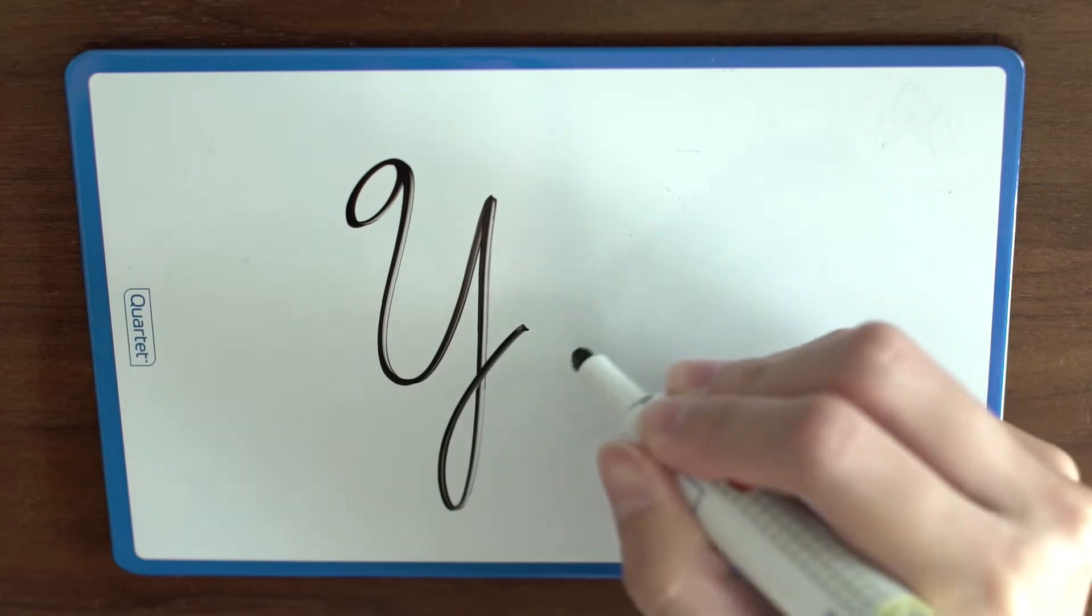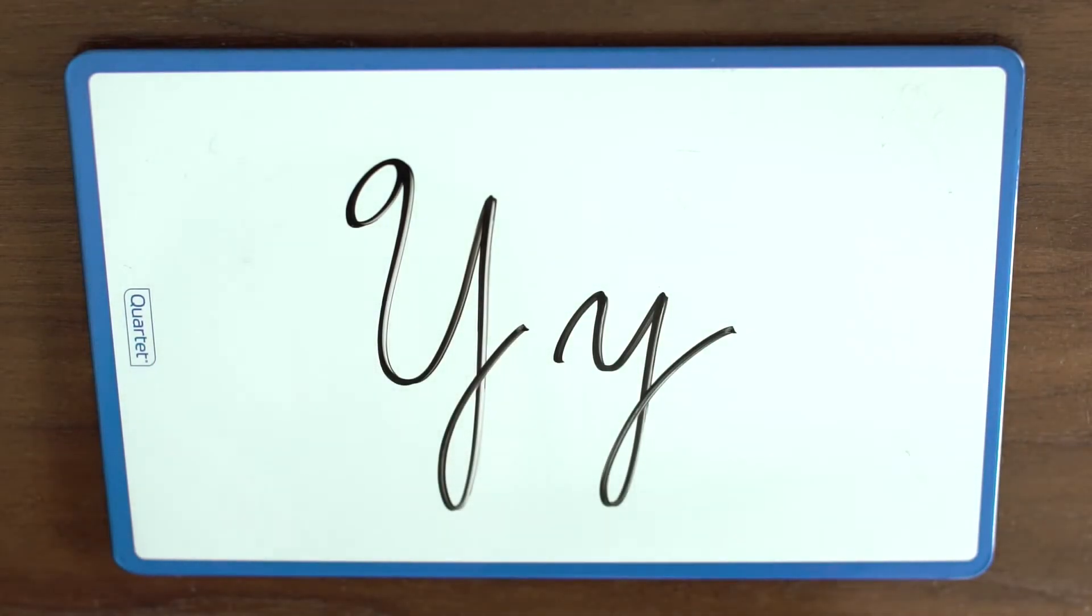For the letter Y, both the capital Y and small Y go below the line. The small Y starts with a hill on the line. Always remember to have that hill even when connecting to tricky letters.